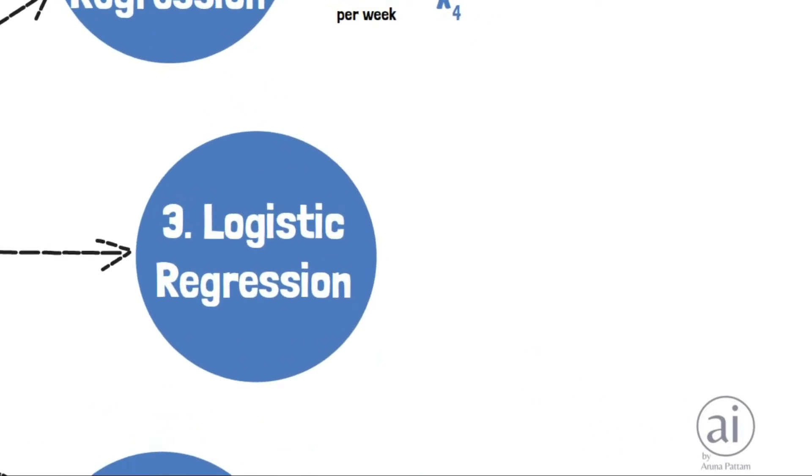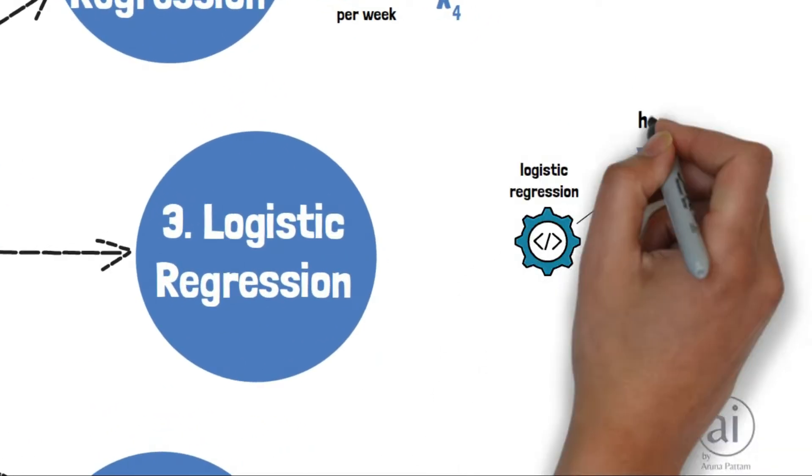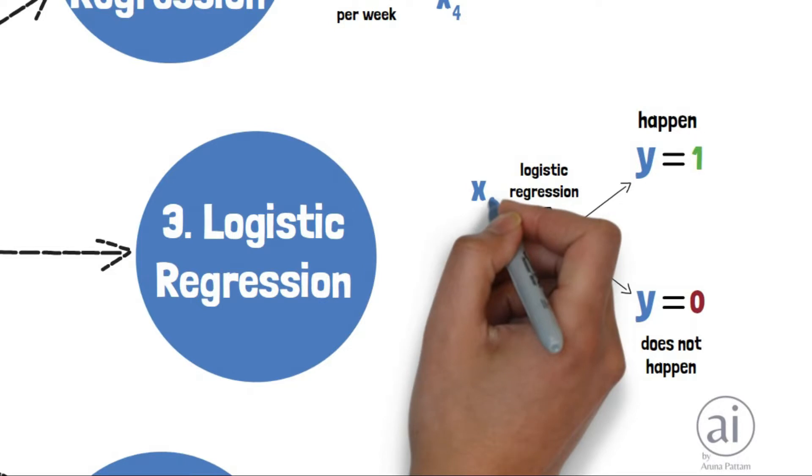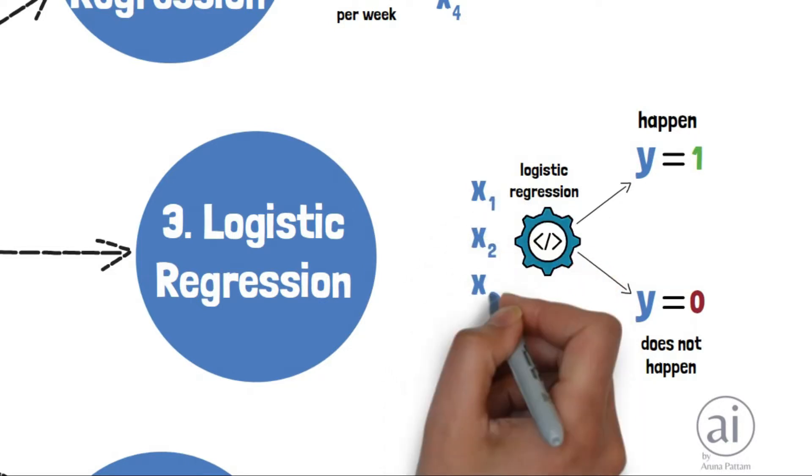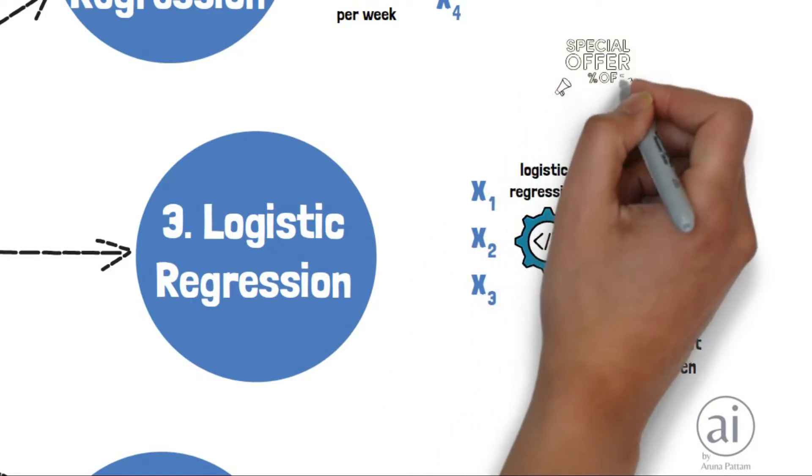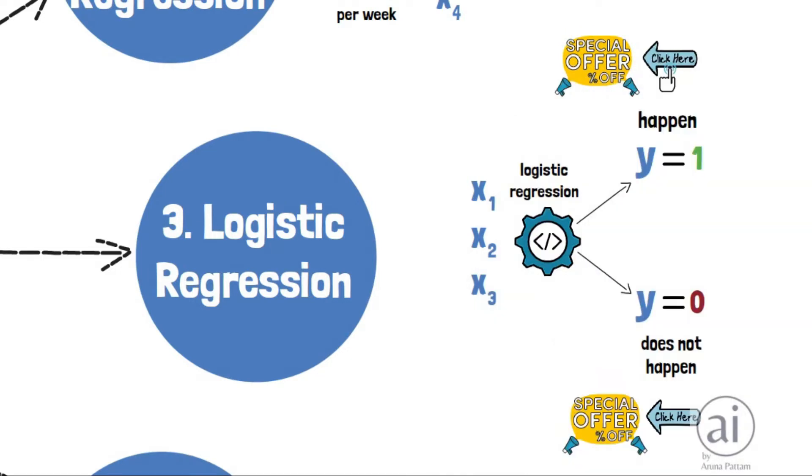Logistic regression is used to predict the probability that something will happen given the value of potential input variables. For example, predicting whether or not someone will click on an ad.